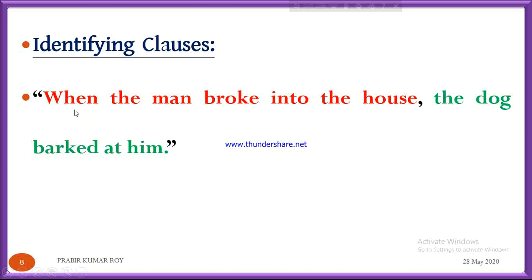Please look at the sentence here: 'When the man broke into the house, the dog barked at him.' In this sentence we have two parts. 'When the man broke into the house' is one part, and 'the dog barked at him' is another part. In both parts we have subject and verb. In the first part, 'the man' is the subject and 'broke' is the verb. In the second part, 'the dog' is the subject and 'barked' is the verb. So both these parts are called clauses.